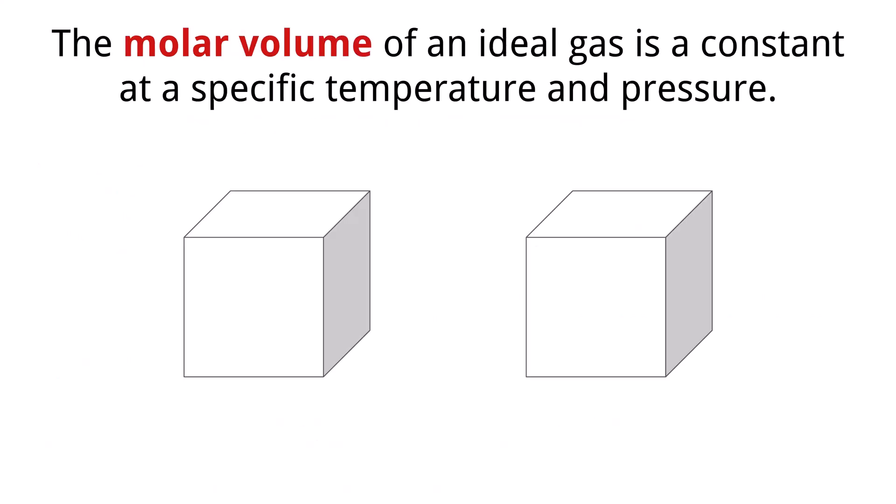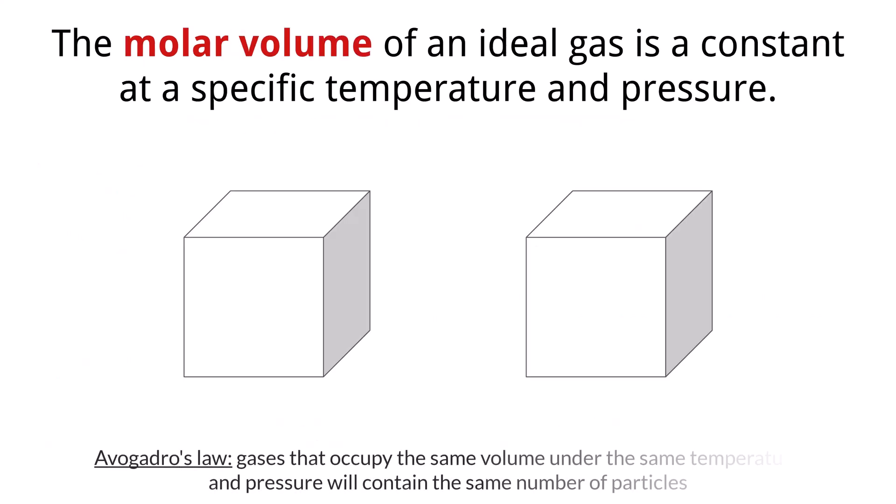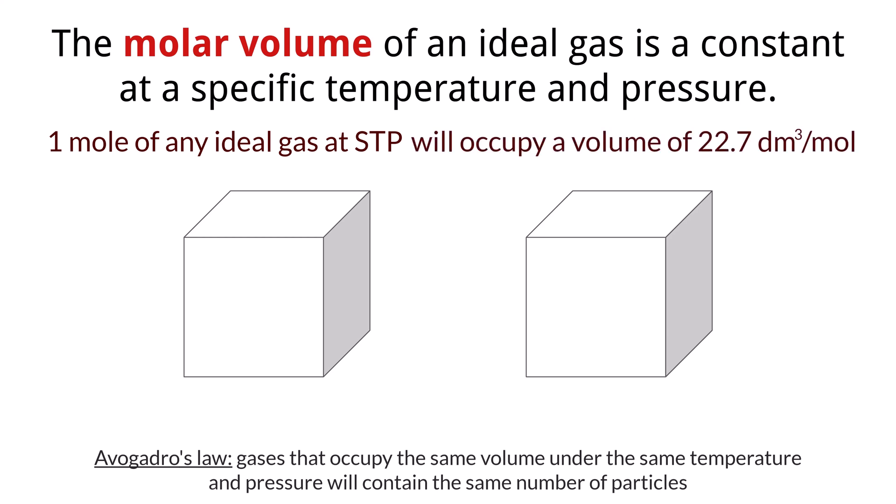We discussed Avogadro's law in the last video, which states that gases that occupy the same volume under the same temperature and pressure will have the same number of particles. We can take that idea one step further here while talking about an ideal gas. Based on Avogadro's law, if we are dealing with one mole of any ideal gas at standard temperature and pressure, which means we have the ideal gas at zero degrees Celsius and one atmosphere, or 101.3 kilopascals, it will occupy a specific volume of 22.7 cubic decimeters per mole. We call this the molar volume, and this is true for any gas under ideal conditions.